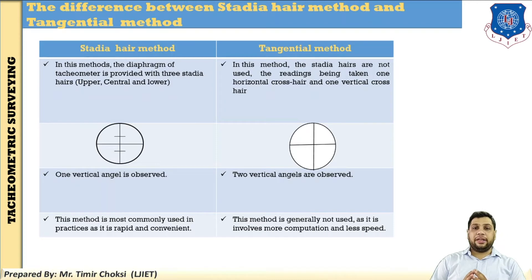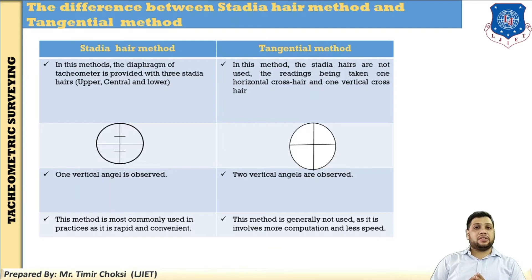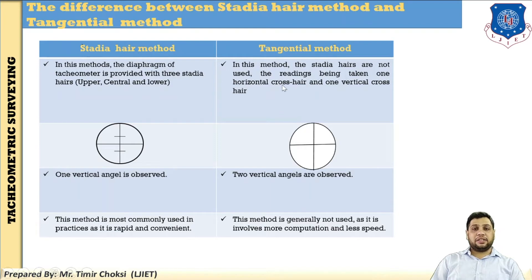The difference between the stadia hair method and the tangential method: in the stadia hair method, for finding the horizontal as well as the vertical distance, we use the stadia diaphragm, which has three stadia hairs — upper, central and lower. But in the tangential method, the stadia diagram is not used. It uses only a simple diagram with one horizontal crosshair and one vertical crosshair. In the stadia method, the diaphragm tachymeter has three stadia hairs — upper, central and lower. In the tangential method, only one horizontal crosshair and one vertical crosshair are used.